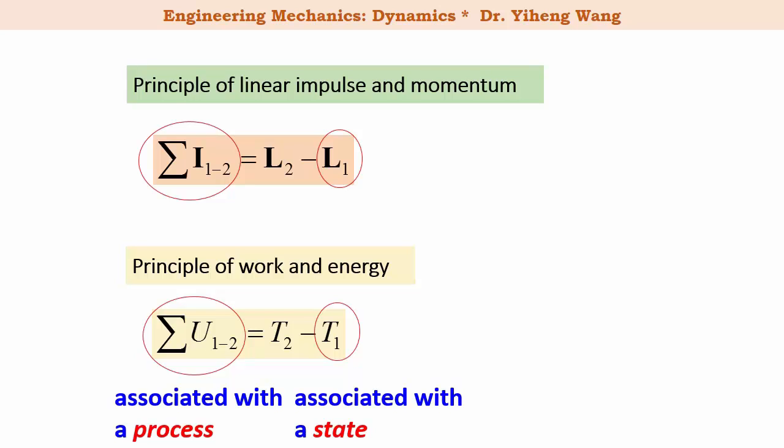The difference is that the principle of work and energy is a scalar equation — both work and energy are scalar properties. However, the principle of linear impulse and momentum is a vector equation, since both impulse and momentum are vectors.